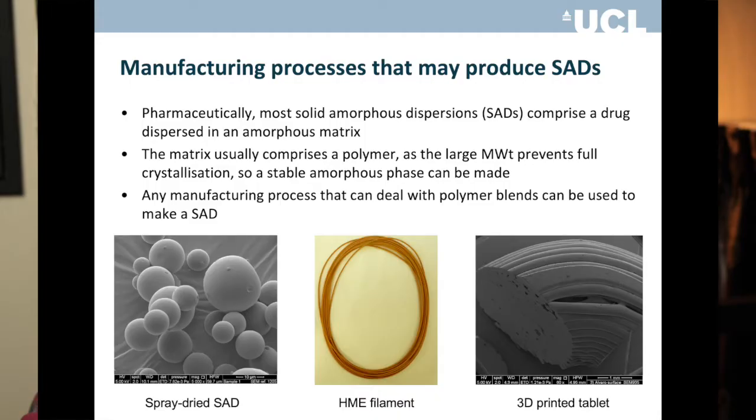Most solid amorphous dispersions, from a pharmaceutical perspective, are going to contain a drug dispersed in a polymer. Because the polymer usually has a large molecular weight, it has trouble crystallising — to crystallise, all molecules need to come together in a repeating pattern. When molecular weight is really large, that's like trying to get large pieces to line up, which is very difficult. So large molecular weight polymers tend to be amorphous, or at best partially crystalline.